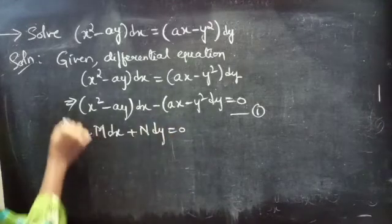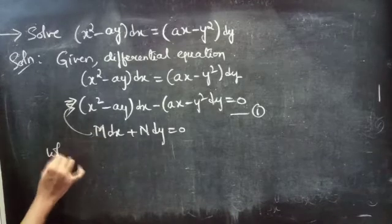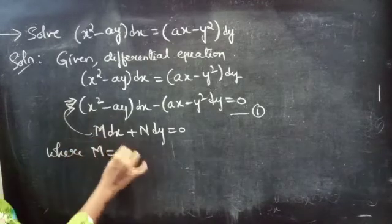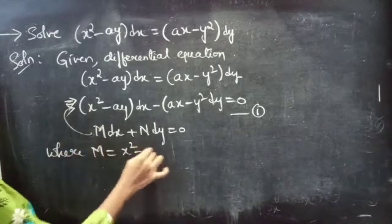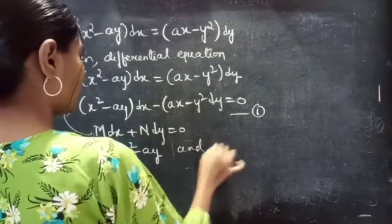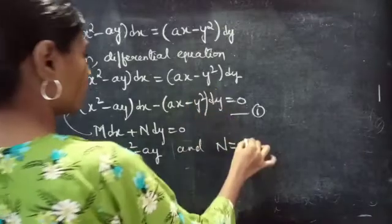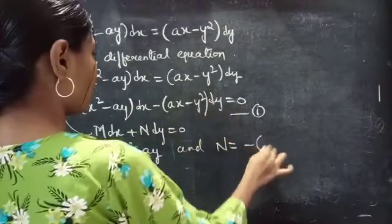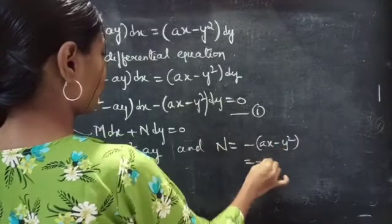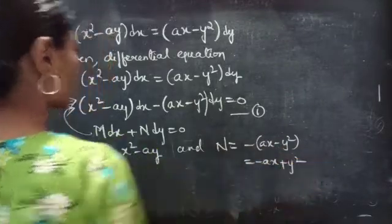Comparing the two, we get M equals to x squared minus ay, and N equals to minus of ax minus y squared, which is equal to minus ax plus y squared.